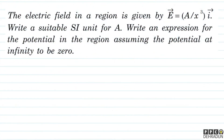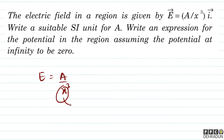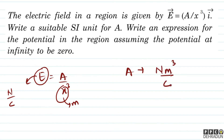Next problem: the electric field in a region is E = (A/x³) x̂. First, find the SI unit of A. Since x is in meters and E is in N/C, we get A's SI unit = N·m³/C.